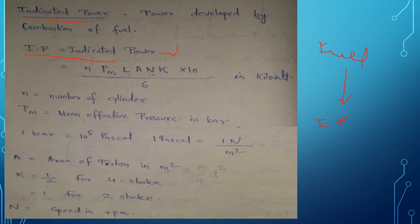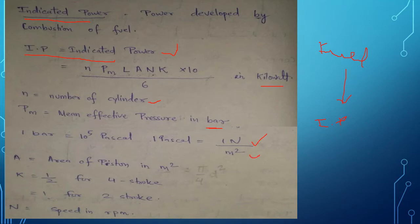In this formula, small n is the number of cylinders used in the engine. pm is the mean effective pressure, which we will read further — it is in bar, where 1 bar = 10⁵ Pascal, and 1 Pascal = 1 Newton per meter square. A is the area of the piston in meter square.